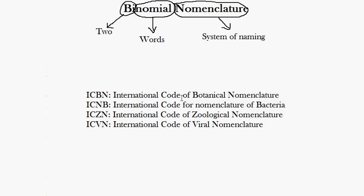Welcome to the presentation of binomial nomenclature. Binomial nomenclature contains three parts: 'bi' meaning two, 'nomial' meaning word, and 'nomenclature' meaning the system of naming. Put them together and you get that binomial nomenclature is the two-word system of naming.